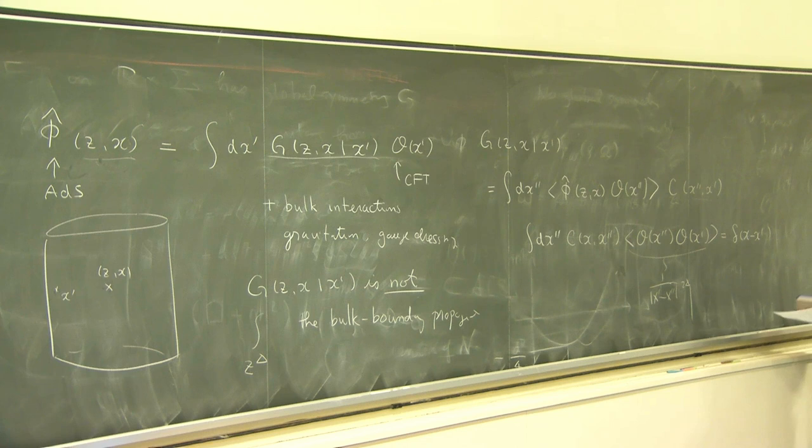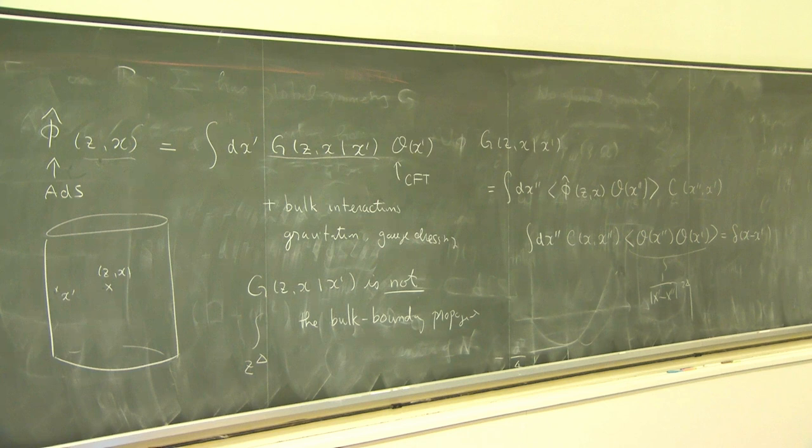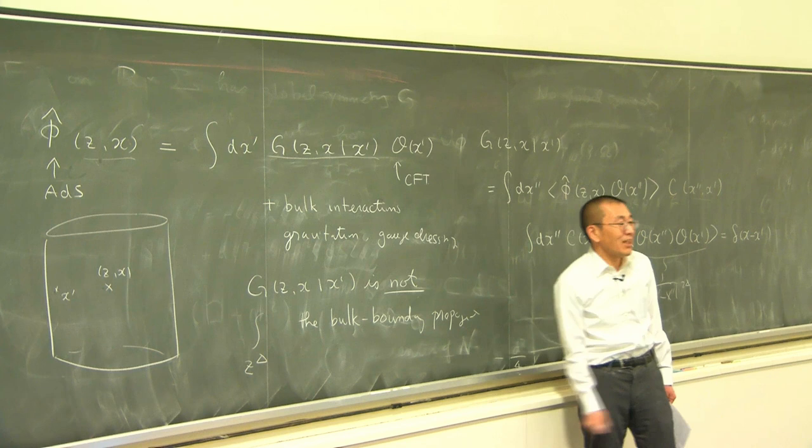So perhaps there is a way to connect this to what we heard this morning. One can comment that this is basically taking the shadow transform of the bulk-to-boundary propagator. It's not the bulk-to-boundary propagator itself, but its shadow — yes, that's a better way to say it.